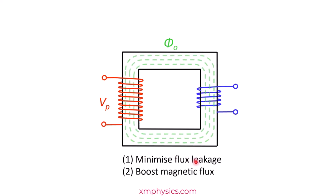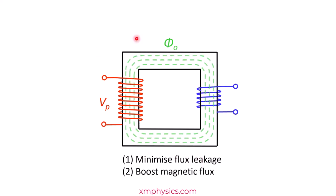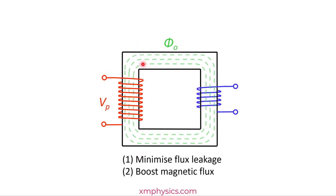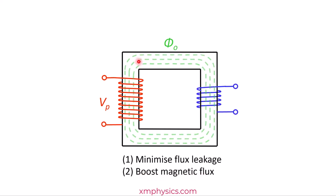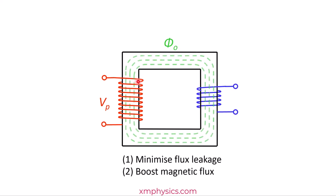So can you see what the soft iron core is for? First, it minimizes flux leakage. No flux is going elsewhere now. Everything produced here is linked to the secondary coil. Secondly, it actually increases the magnetic flux also. Remember, soft iron is a ferromagnetic material. It has a very high magnetic permeability. So the magnetic flux produced with this iron core is much higher than if it's an air core, if it's just empty air here.